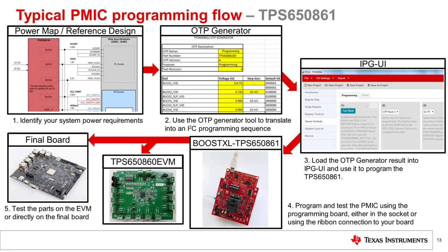There are two banks of OTP memory in the TPS-650861 device, so each sample can be programmed twice, even if a mistake is made during the first attempt at programming.